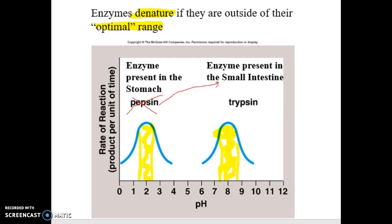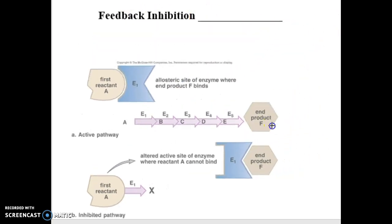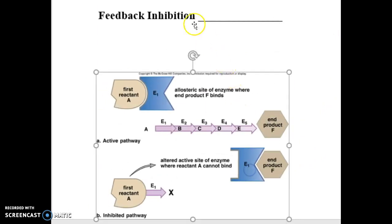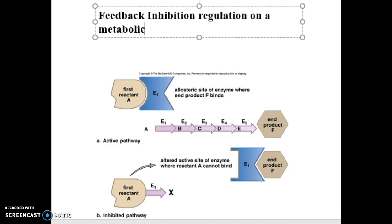All right. So fortunately though, all metabolic pathways have a way to control and regulate themselves. This is called feedback inhibition. So feedback inhibition is regulation on a metabolic pathway. So getting the pathway to function at an optimal speed and then sometimes it needs to pause. It says, okay, hold on. Let's pause. All right. Now let's pick it back up and keep going. So on and so forth.